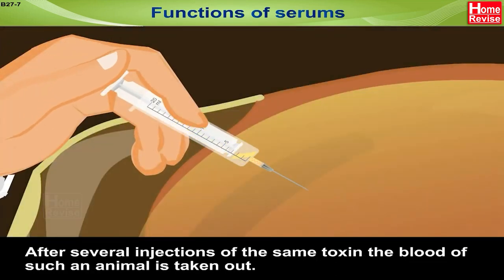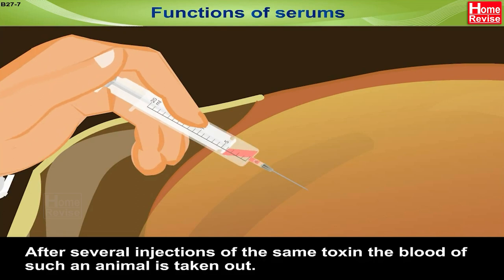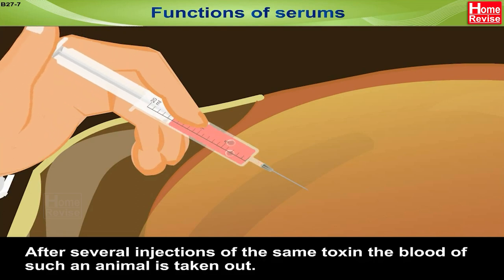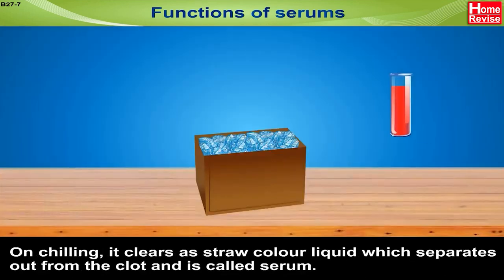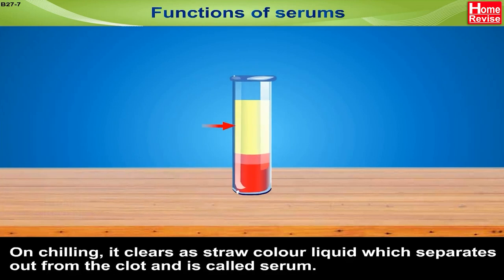After several injections of the same toxin, the blood of such an animal is taken out. On chilling, it clears a straw-coloured liquid which separates out from the clot and is called serum.